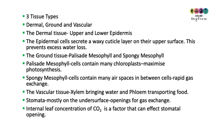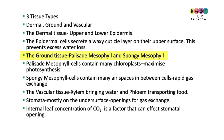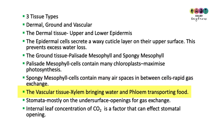To summarise: when drawing or labelling the internal structure of the leaf, mark in the three tissue types — dermal, ground, and vascular. The dermal tissue consists of the upper and lower epidermis; epidermal cells, particularly on the upper epidermis, secrete a waxy cuticle to prevent excess water loss. The ground tissue consists of the palisade mesophyll, whose cells contain many chloroplasts to maximise photosynthesis, and the spongy mesophyll, which has many air spaces for rapid gas exchange. The vascular tissue is the xylem bringing water into the leaf and the phloem transporting food out.